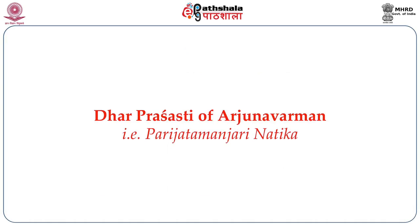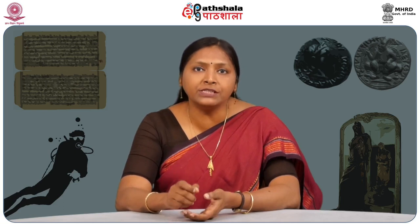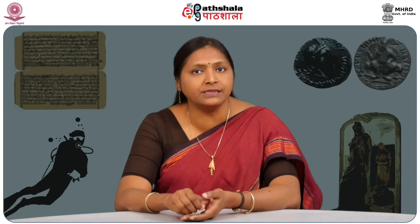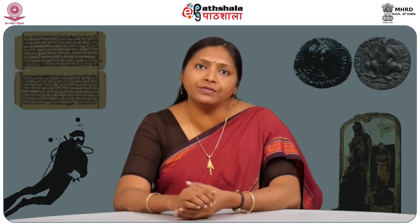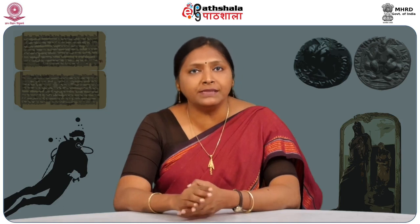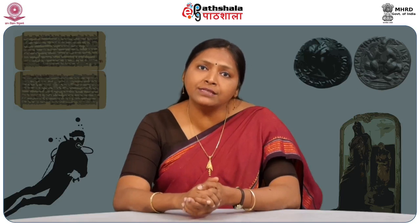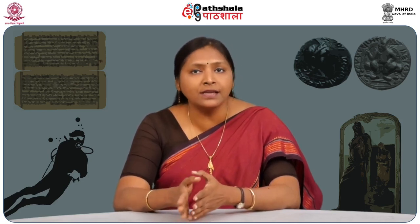The Dhar Prashasti of Arjuna Varman is the same as the Parijat Manjari Natika, because the composer Madanath calls it both a Prashasti and a Natika. This Natika is the eulogy of King Arjuna Varman, who ruled in the early part of the 13th century CE — his other inscriptions are dated 1213, 1214, and 1215 on copper plates. The inscription is 5 feet 8 inches by 5 feet, and Madan himself mentions it was engraved on two black stones. Only one stone has been discovered so far.